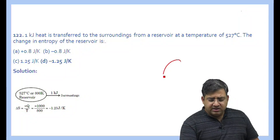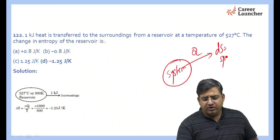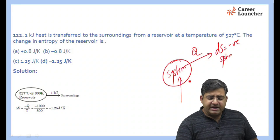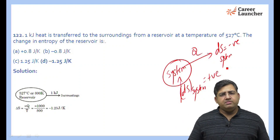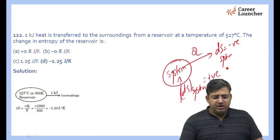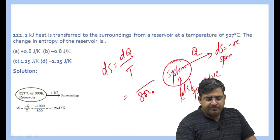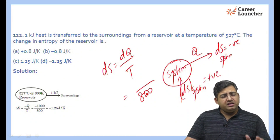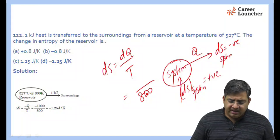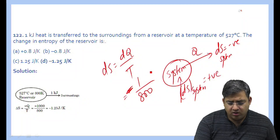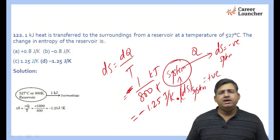The next question: if heat is rejected from a system, the change in entropy of the system is negative; if heat is added, the change in entropy is positive. Here we find change in entropy using dS = dQ/T. Temperature is 800 Kelvin and heat is being rejected by the system to the surroundings, so it is taken as negative. The result is minus 1.25 kJ per Kelvin.